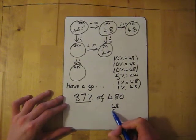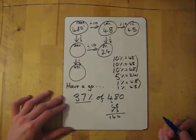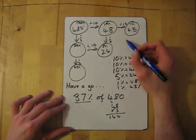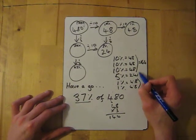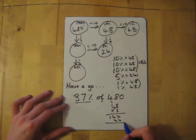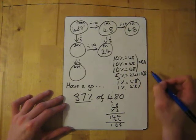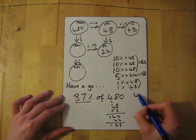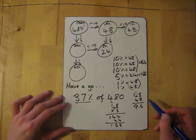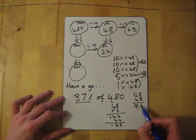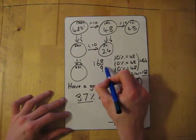So 48 times 3 gives me 144. I need to keep that safe—that equals 144. Then if I add the 24 on as well, which gives me 168. Now I'm going to add the two of these together, so 4.8 add 4.8 gives me 9.6.